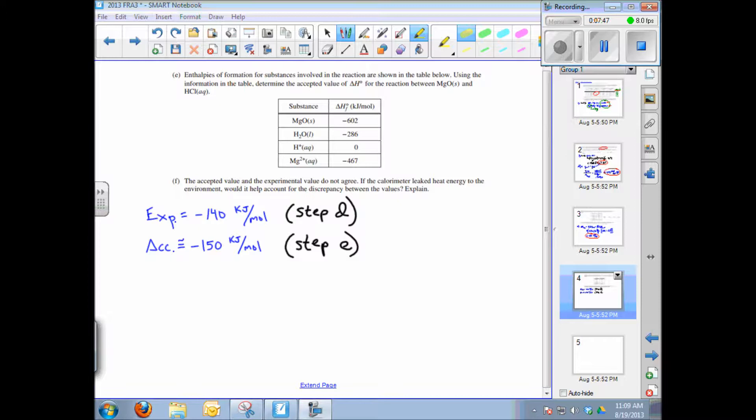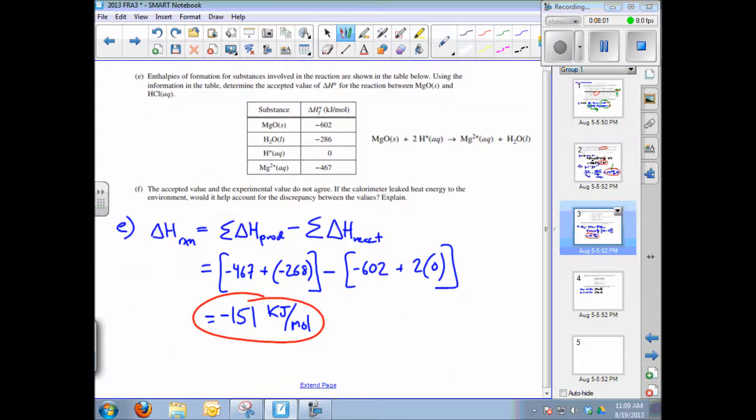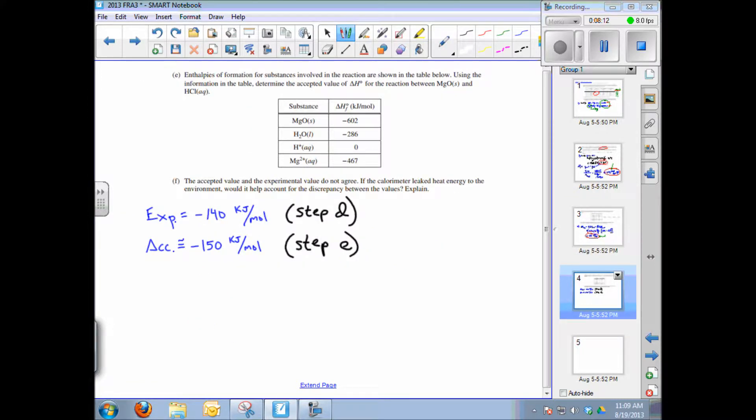The last subquestion, F, states the accepted value and the experimental value don't agree. We calculated the experimental value in step D of this problem, which was 140 kilojoules per mole. In step E, the accepted value based on delta H of formation was negative 150, roughly, kilojoules per mole. So why the differential? The question asks, if the calorimeter leaked energy to the environment, would it help account for this discrepancy? And the answer is yes.